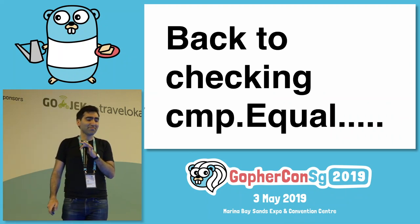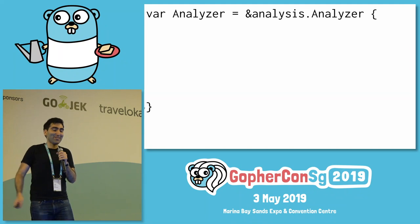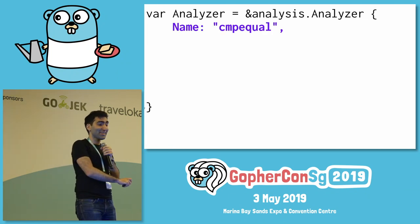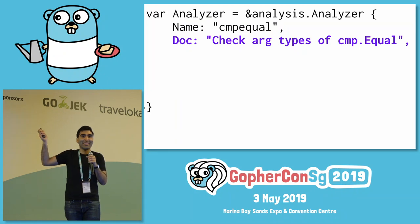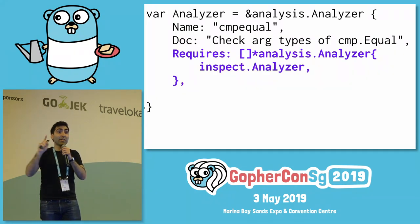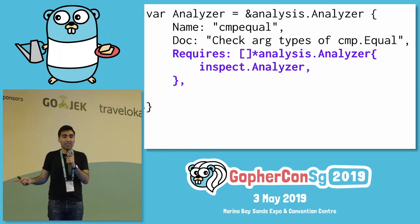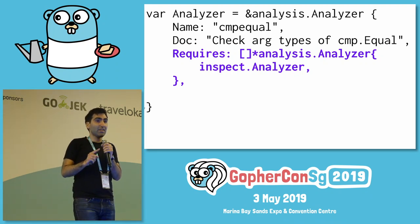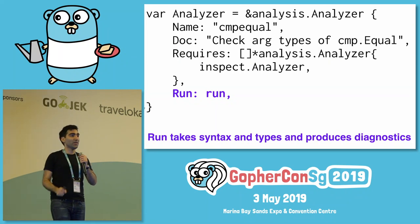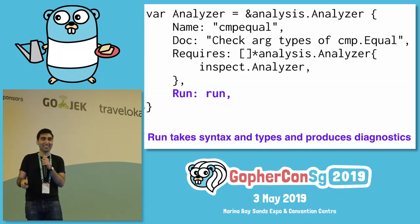Let's get back to our example and look at the code. Every analyzer starts with an Analyzer struct — this is a configuration for an analyzer. It has a name; we'll call it 'compequel' because it checks cmp.Equal. We give it some documentation: 'Check arg types to cmp.Equal.' There's a Requires field — analyzers can depend on other analyzers, and we're depending on the inspect analyzer. And finally there's a Run function, which does the work: it takes syntax and types and produces diagnostics.